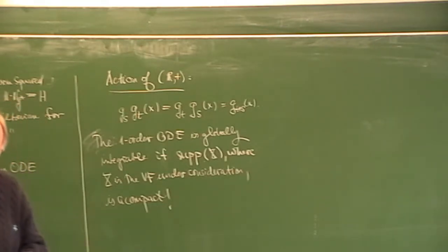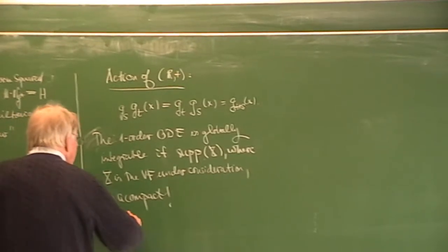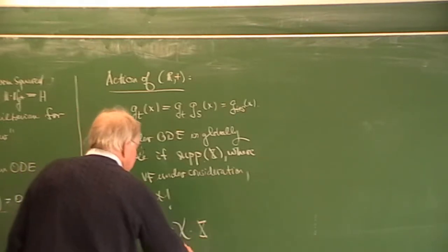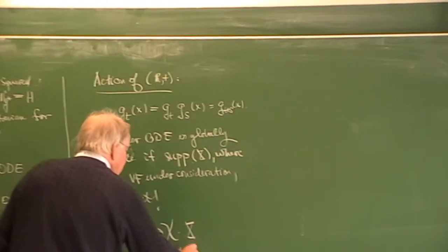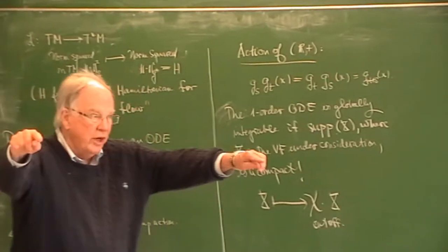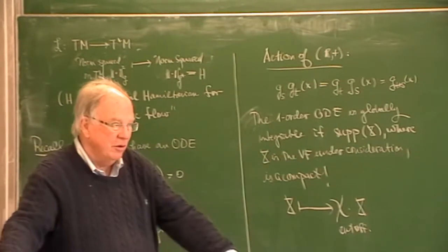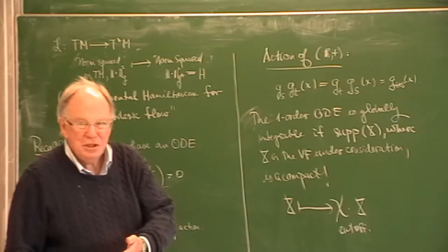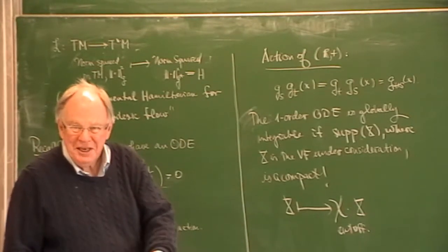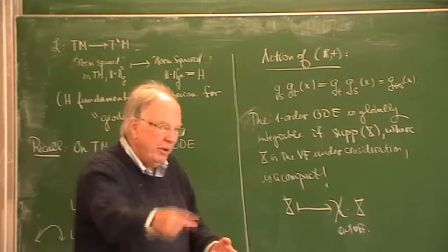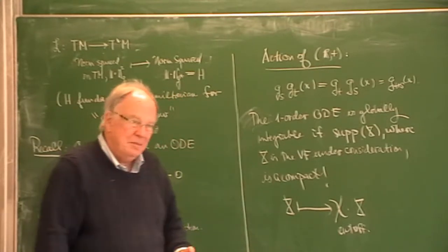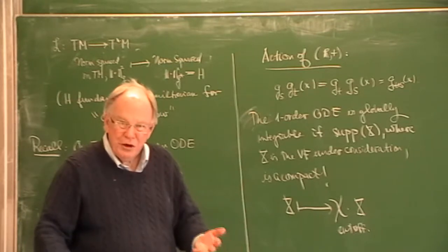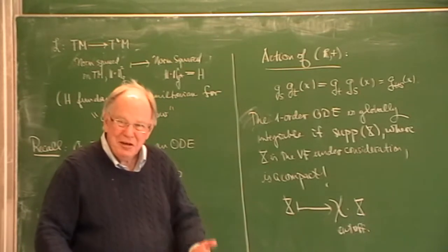What that means, for example, is that you take X and cut it off by a cutoff function which is one on any place you care about, goes down to zero, and has compact support. So this mysterious thing of local integrability is not mysterious if you're only worried about a certain compact region in your manifold. Cut it off, and it's globally integrable—it's an R action, an action of the additive group R.